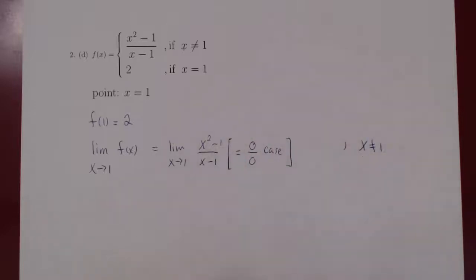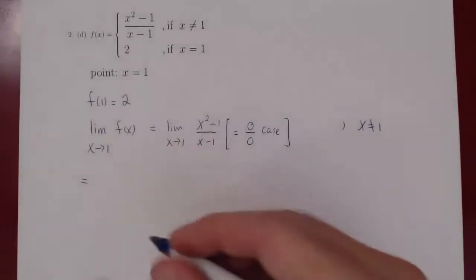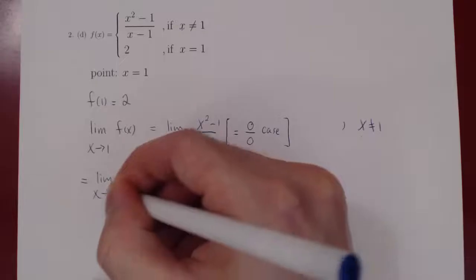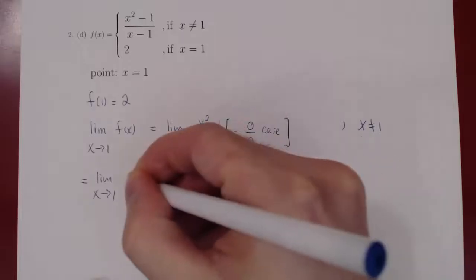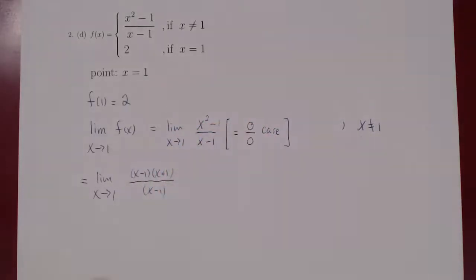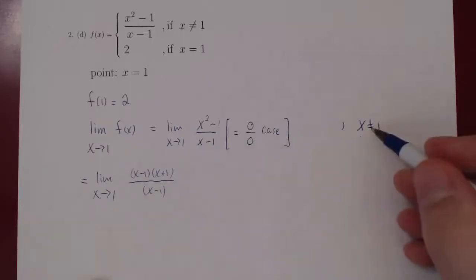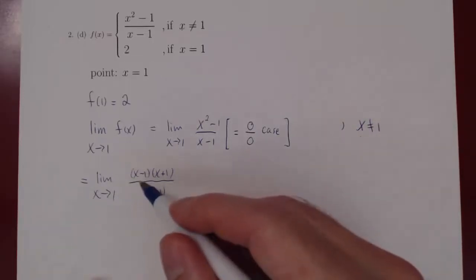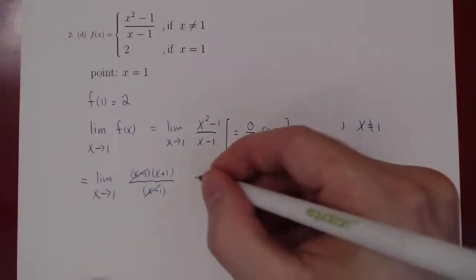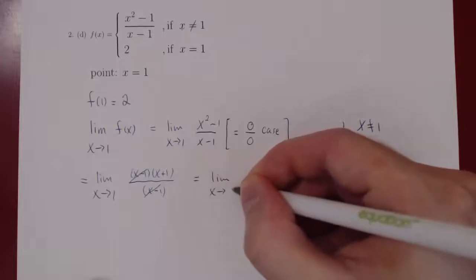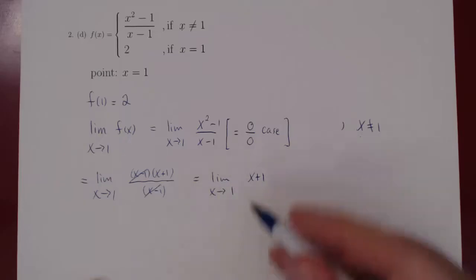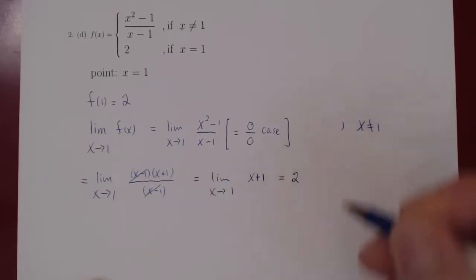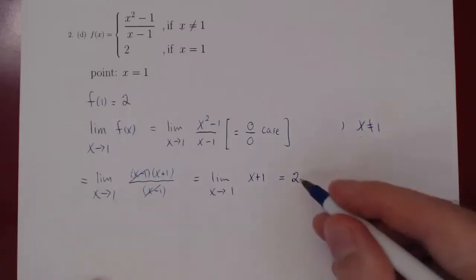We have two polynomials, so we can figure out the problem by factoring. x squared minus 1 factors as (x minus 1)(x plus 1), divided by the single factor of x minus 1. Because x is not equal to 1, x minus 1 is not 0, so we can cancel, and we're left with a very simple limit: what happens to x plus 1 as x approaches 1? As x approaches 1, x plus 1 approaches 2. So the limit exists and equals 2.